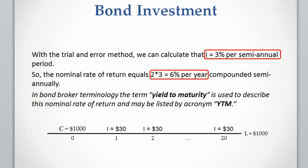We have to solve this equation using the trial and error method or the IRR function in Excel, which I'm going to explain in the next video. We calculate i as 3% per semi-annual period. Then we need to calculate the nominal rate of return, which equals 2 multiplied by 3%, giving us 6% per year compounded semi-annually.